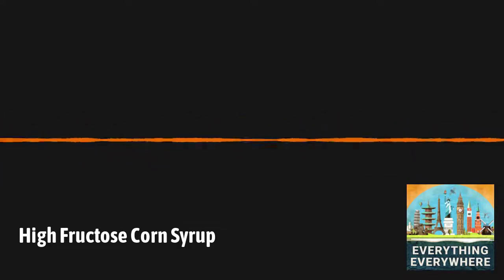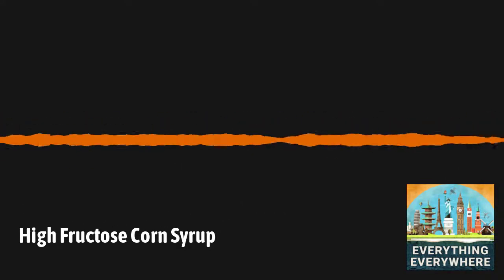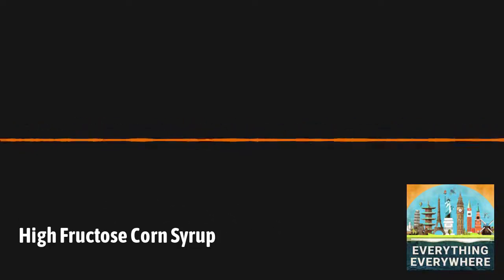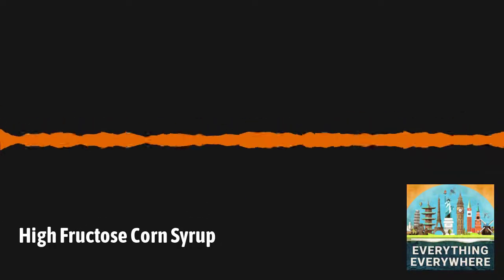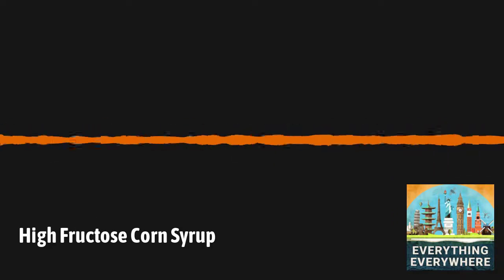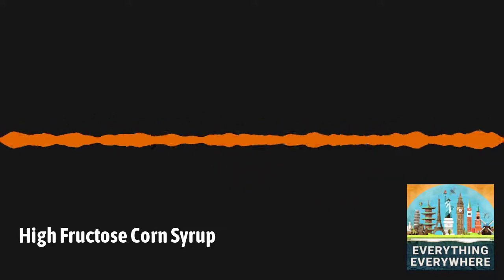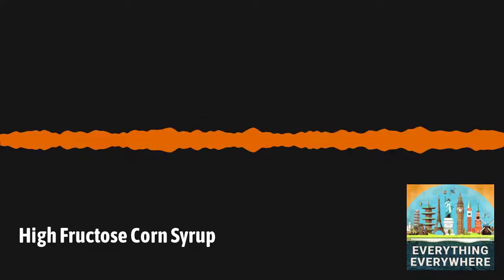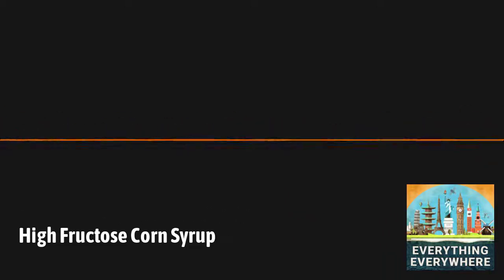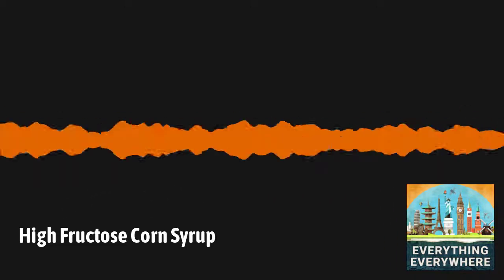However, it isn't just in sweet products. It's in a host of products that you would probably never expect. Chicken nuggets and other prepackaged meats such as deli meats have high fructose corn syrup. Breads, crackers, and other baked goods all have high fructose corn syrup added. Salad dressing, soup, yogurt, canned vegetables, canned fruit, cottage cheese, peanut butter, pickles, and many, many other products all have high fructose corn syrup as an ingredient.